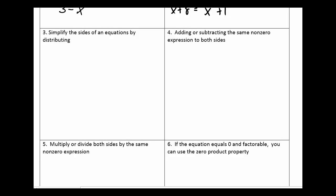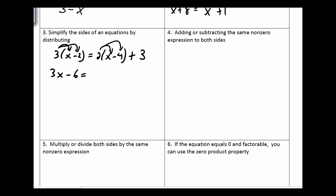Our third step involves distributing. We are allowed to distribute in a given equation on the same side. So, if I had 3(x minus 2) equals 2(x minus 4) plus something else, I can distribute on the left: 3 times x is 3x, and that's minus 6. And on the right we have 2x minus 8. But I don't distribute to the 3 because I'm adding 3 at the end — so I just add 3 there. At this point, we could apply the previous rule about combining like terms, but right now I just want to illustrate the different rules we have at our disposal.